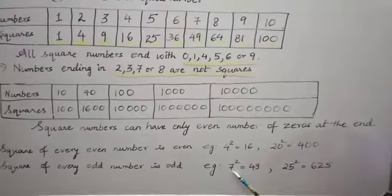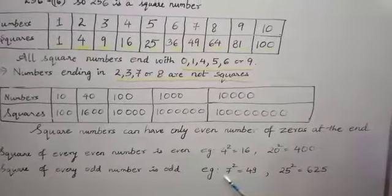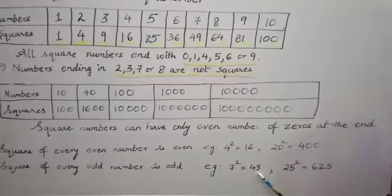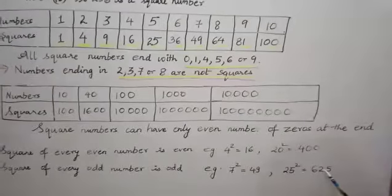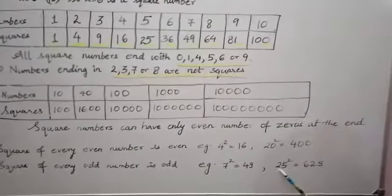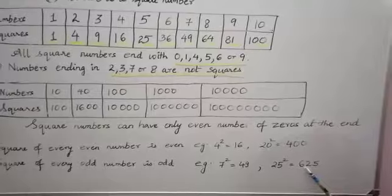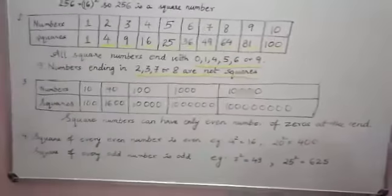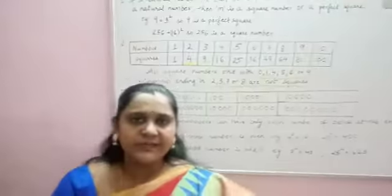The same way, 7 square is 49, 7 is odd, 49 is also odd and 25 square is 625 where 25 is odd and 625 is also odd number. So, we will continue with the next properties.